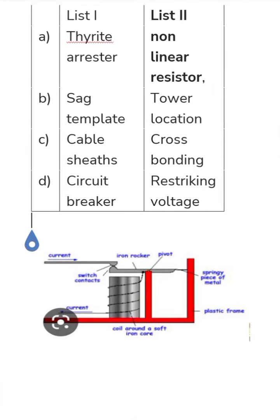The circuit breaker is used in abnormal conditions. The moving contact and fixed contact are opened during a fault. The two contacts operate under the same voltage — this is known as the restriking voltage.